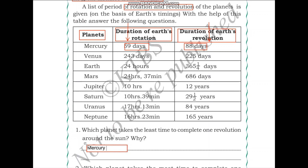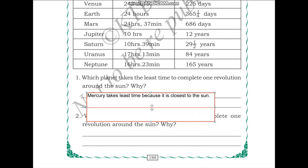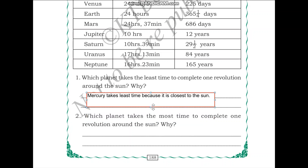Mercury takes the least time because it is closest to the Sun. Because it is closest to the Sun, the orbit size is very small when compared to other planets. This is why Mercury takes the least amount of time.